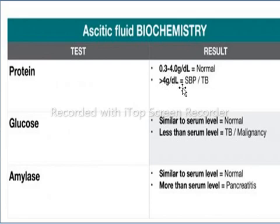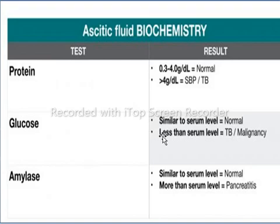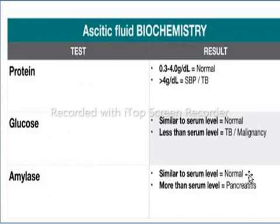If protein is greater than 4 gram per dL, it indicates spontaneous bacterial peritonitis or TB. When glucose is similar to serum level, it is considered normal. When glucose is less than the serum level, it indicates TB and malignancy. When amylase is similar to serum level, it is considered normal. When amylase is more than serum level, it indicates pancreatitis.